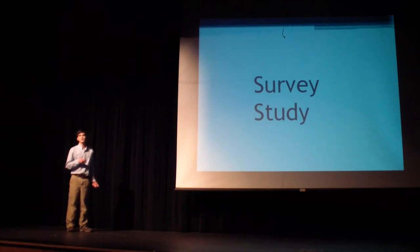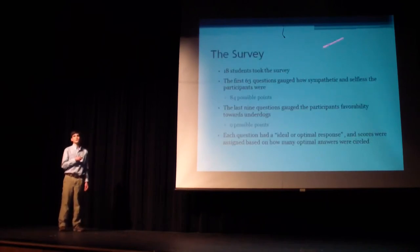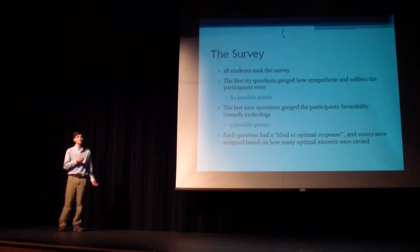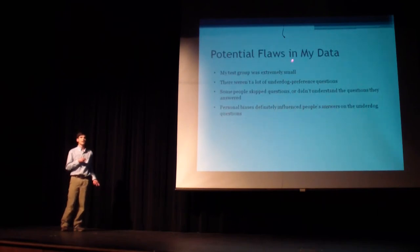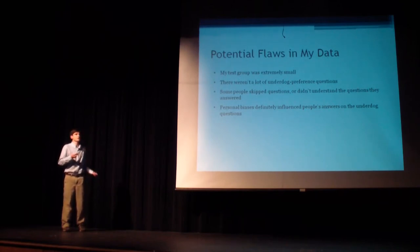I decided to do a survey — because we don't take enough tests in English class already, so I'm glad to make up one for everyone. Eighteen students took the survey with 63 questions that measured how sympathetic they were, and the last nine questions figured out how much they preferred underdogs. Before I go further, I should note some flaws: only 18 participants isn't a lot, there weren't many underdog preference questions, and some people skipped questions or didn't understand certain words.